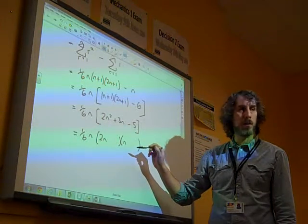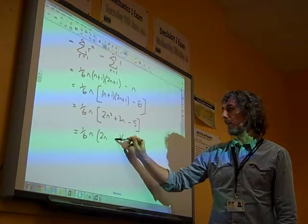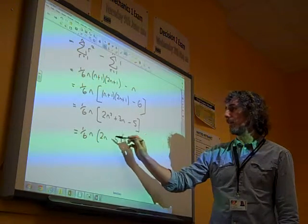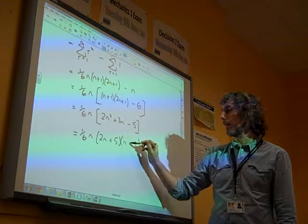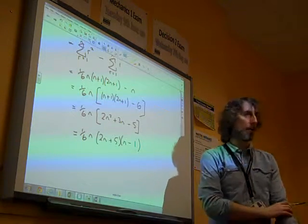And it must be 5 and the other one, 1. So if the 5's there and 1's there, what have we got? Is that going to be right? Plus 5. Yeah, plus 5 and minus 1. And there we've got it.